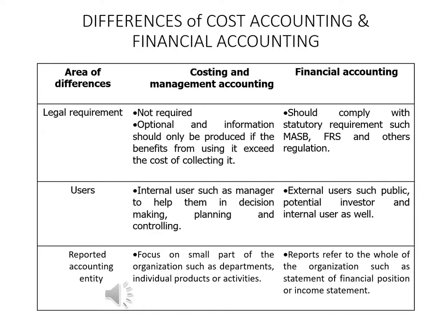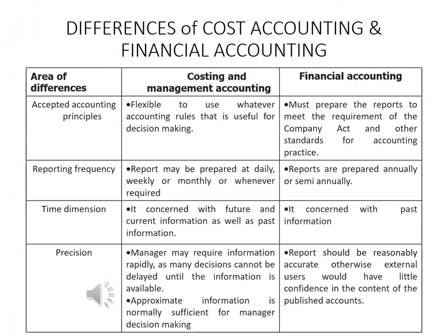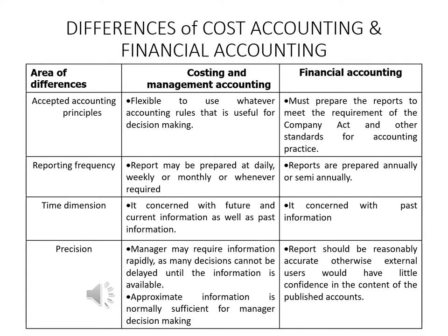For the reported accounting entity, Cost Accounting focuses on a small part of the organization, such as production, marketing or R&D, depending on what issue to look into. While Financial Accounting involves the whole organization, as the preparation of financial statements involves data from every department. On accounting rules, Cost Accounting has no specific rules, whilst Financial Accounting must be prepared according to the Companies Act. For reporting frequency, Cost Accounting is prepared when required, while Financial Accounting reports must be prepared at least annually.